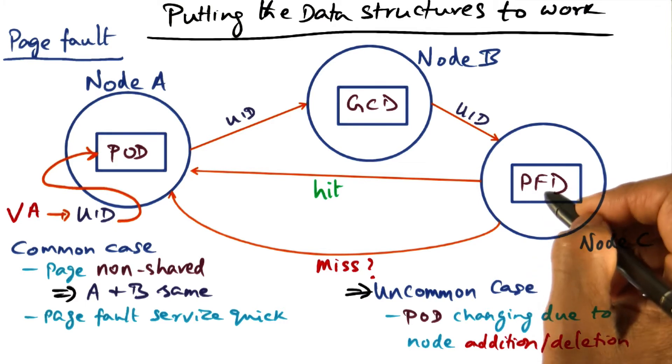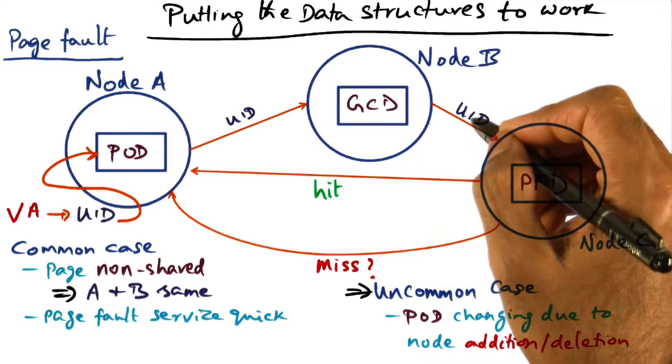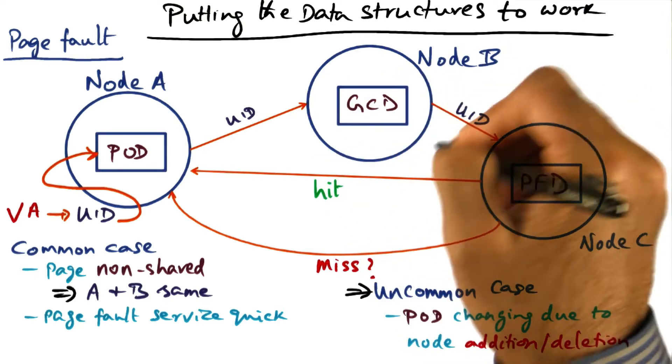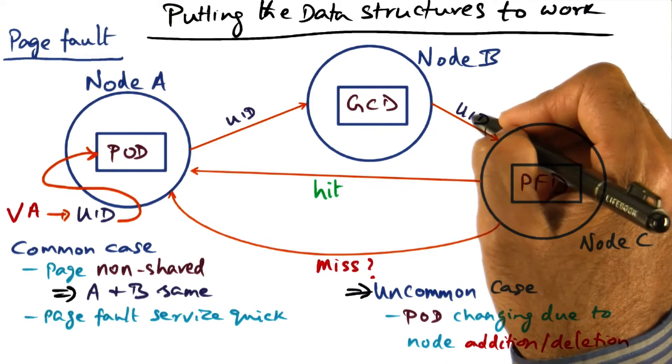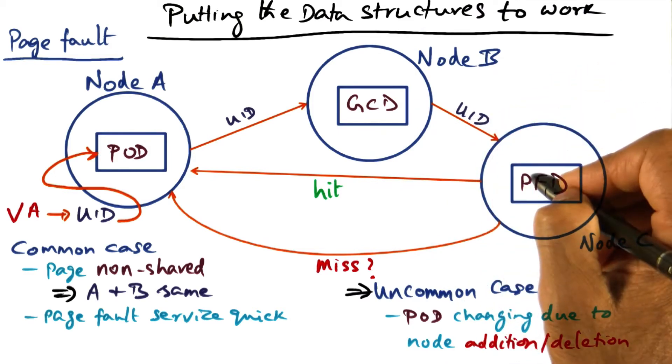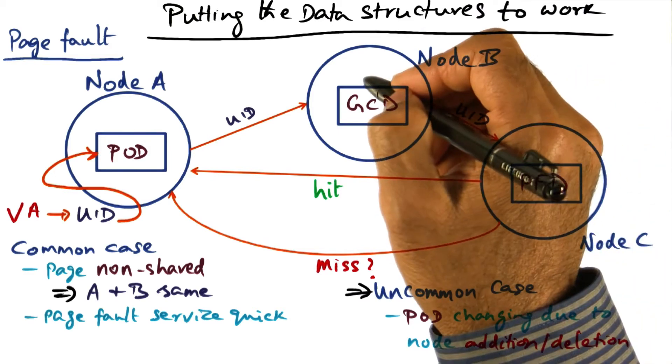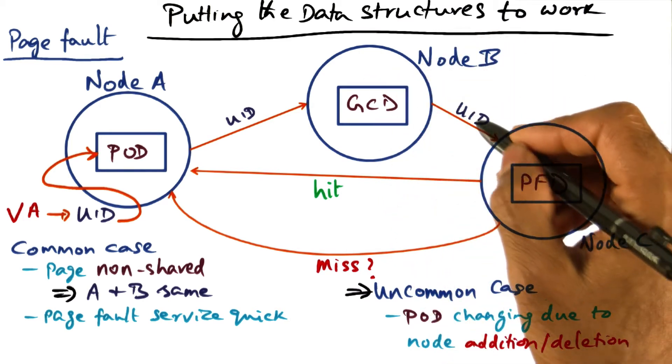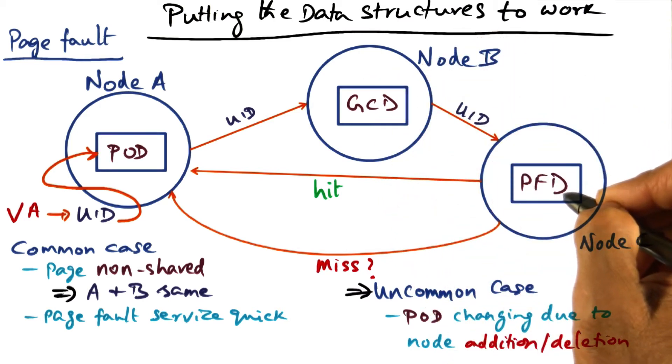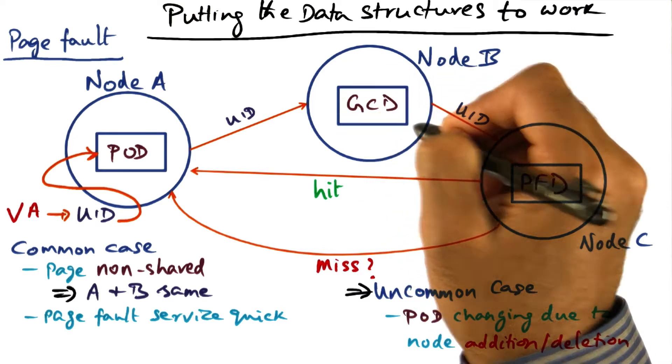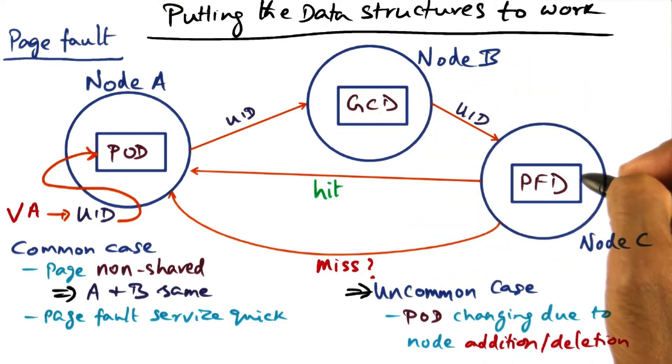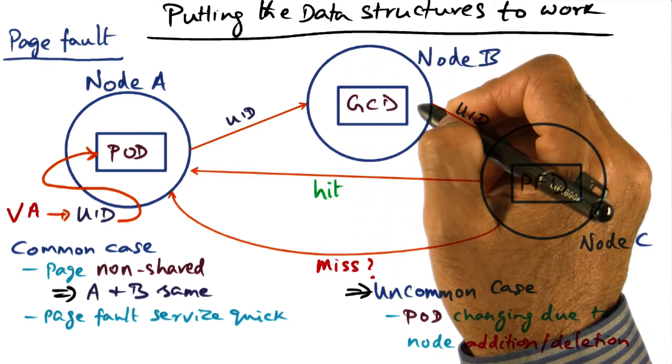And if it has been thrown away from the PFD, what he would have done is inform the node who has the ownership for this UID. This node is the owner for this UID. If he evicts that page, he has to tell this node that I used to back this UID in my PFD, but I got rid of it, and I sent it to some other node, let's say node D. So that is something that has to be communicated to this GCD.